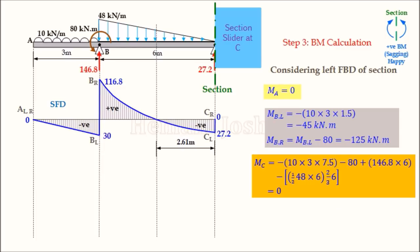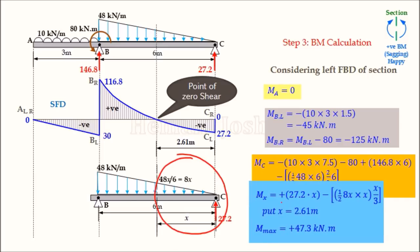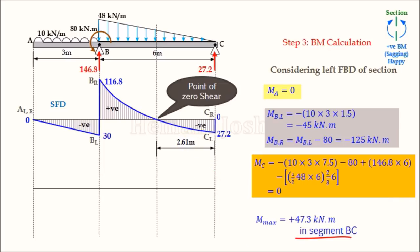Since we know the point of zero shear is at X = 2.61 m from C, we need the peak bending moment there. Using the bending moment equation already derived for segment BC with the right FBD — force RC = 27.2 acting at distance X (sagging, positive) minus triangular load moment of 0.5 × 8X × X acting at X/3 (hogging, negative) — substituting X = 2.61 m gives the maximum bending moment value in segment BC. This peak value is plotted in the bending moment diagram.